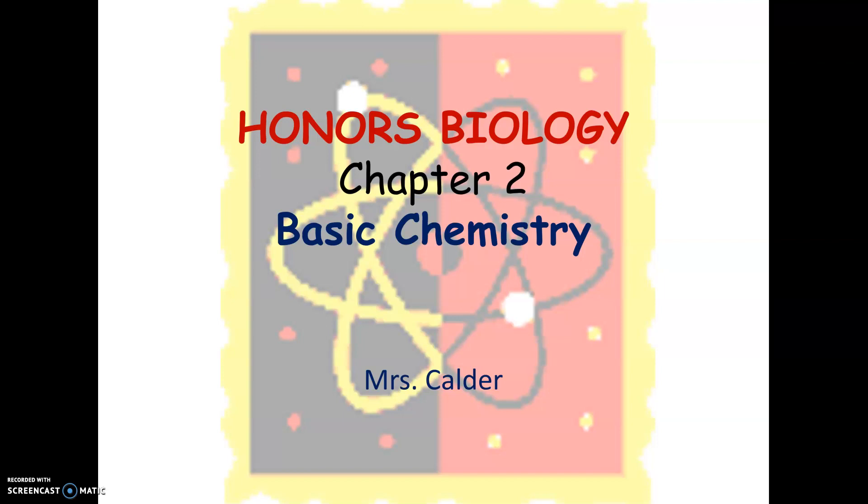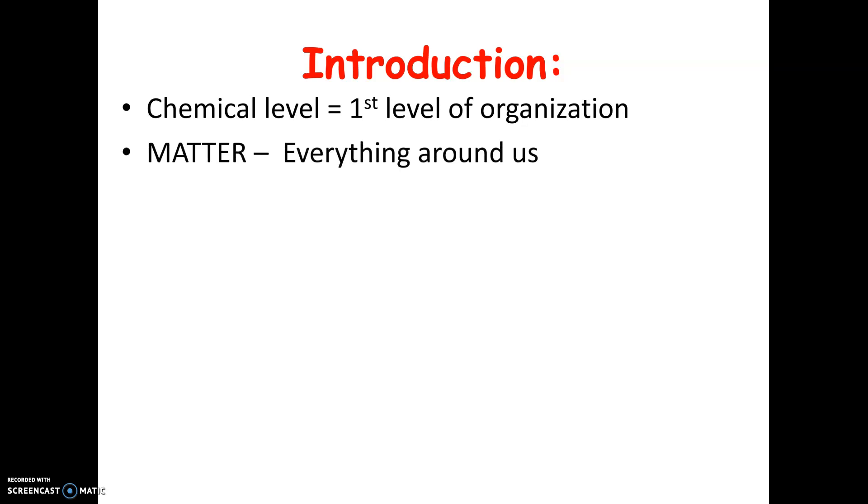We're starting Chapter 2, which is called Basic Chemistry. Remember when we talked last chapter about characteristics of living things and how they were organized into levels? Our first level was the chemical level. So in order to understand life, which is our topic for the year, we want to start on the chemical level and have an understanding of how atoms and molecules and reactions work so that we can understand how cells are put together and function to keep us alive.